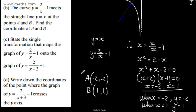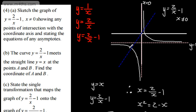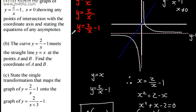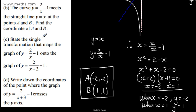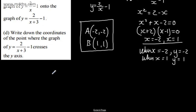We can see graphically the points (1, 1) and (-2, -2). That's not a massively accurate diagram, and we wouldn't leave this on — this is just showing where they are. In part C, state the single transformation that maps the graph of y = 2/x - 1 onto the graph of y = 2/(x + 3) - 1. Well, this is going to be a horizontal translation.